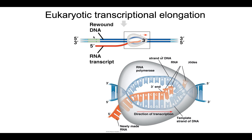During elongation, RNA polymerase has escaped the promoter and the RNA transcript is being made, moving toward the polyadenylation signal sequence. It reads the template strand — for example, reading a T and writing an A, or reading an A and writing a U, the reverse complementary — and it just keeps doing that over and over again.